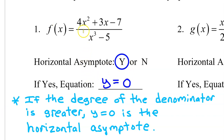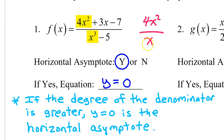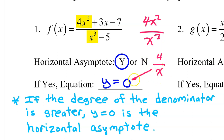The reason why the equation is y equals 0 is because the end behavior of a rational function is determined by the leading term of the numerator and the denominator. If you take these together, we have 4x squared over x to the third power. The x squared and the x to the third power simplify down to 4 over x. As x approaches infinity, the value of this expression gets smaller and smaller and approaches 0.